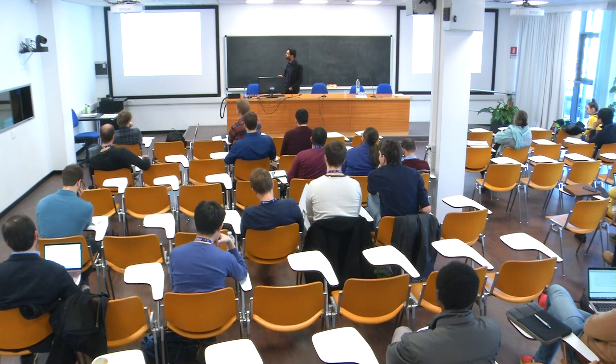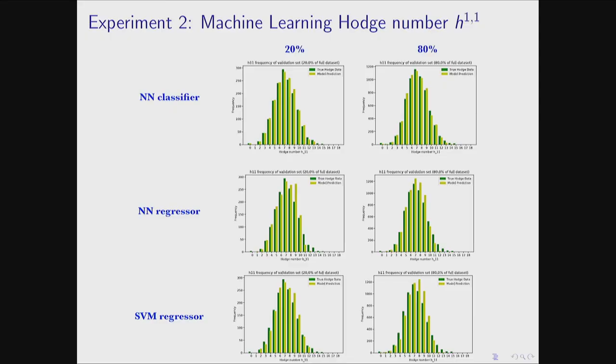This histogram plot shows all the Hodge numbers: they go up to 19 and peak at around seven. The green distribution is the true distribution, and the yellow one is what our machine learning algorithms are predicting. It looks pretty nice. Training with 20% of the data versus 80% shows some improvement.